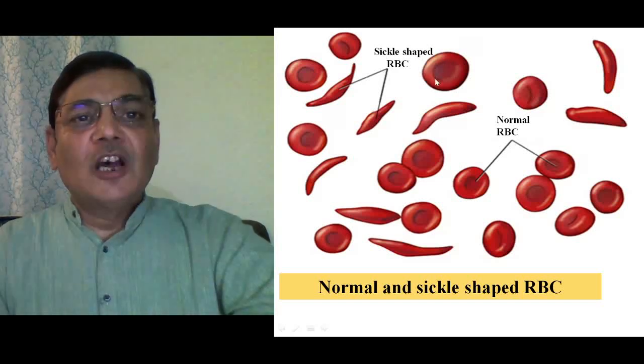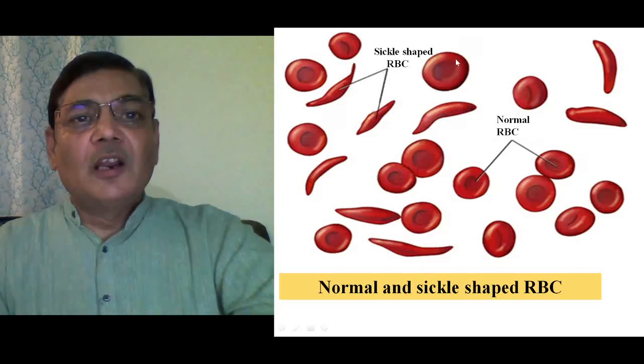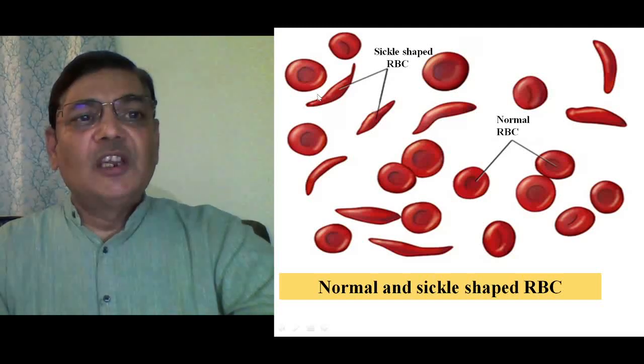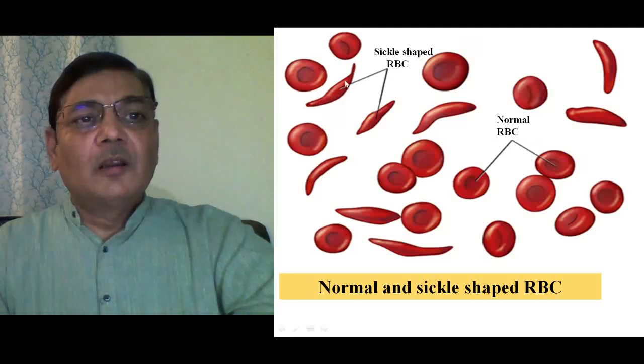The normal RBCs are biconcave round structures whereas sickle-shaped cells are much elongated.